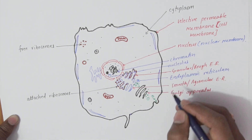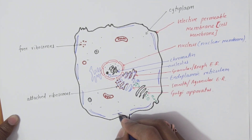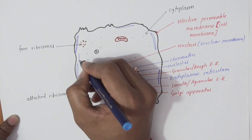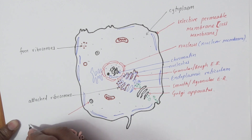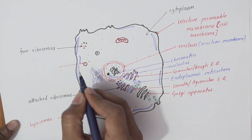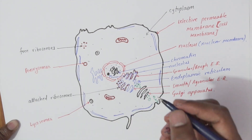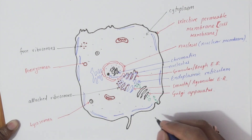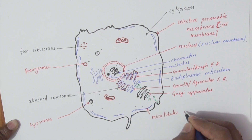There are tubular or filamentous structures working as a cytoskeleton, helping the cell to maintain a desired shape, called microtubules and microfilaments. This is the lysosome, and this is the peroxisome.